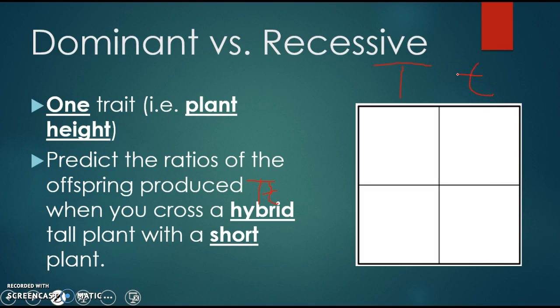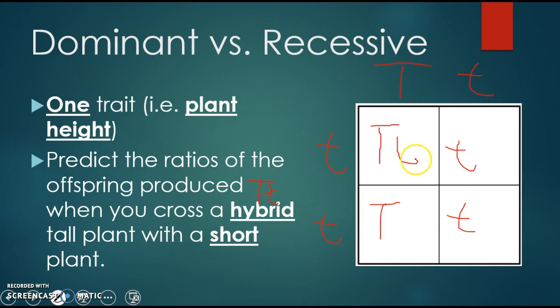When you cross a hybrid individual with a short individual, short is recessive, so the genotype of the recessive individual will be lowercase t, lowercase t. Since it's a Punnett square, you bring your letters down from the top and bring your letters over from the side, keeping the dominant alleles first. This produces all possible genotypes of the offspring from this cross.